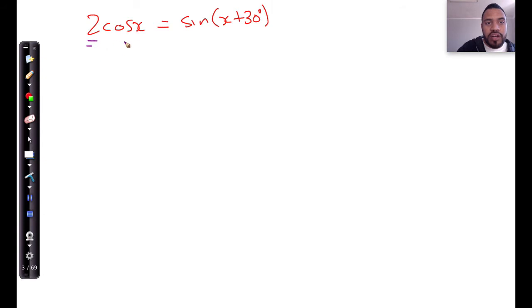But I've got 2 cos x. If I just had cos x without this, I can simply turn this into cos of 90 minus x plus 30. That's one option.